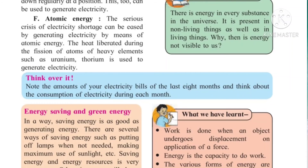Uranium and thorium are the names of the elements. When some rays are bombarded on these elements, a lot of heat energy is generated in this reaction, and from this heat they generate electricity. This is all about atomic energy.